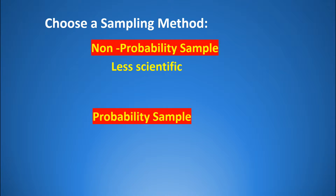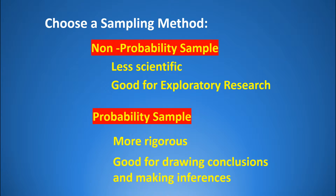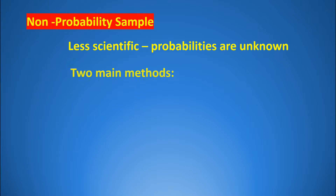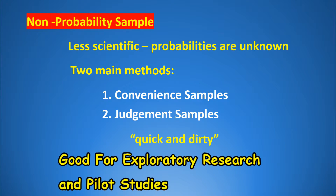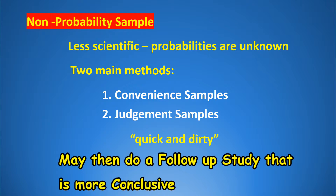A non-probability method is less scientific but usually more convenient, cheaper, and quicker than a probability method. We use non-probability methods when conducting exploratory research. Probability sampling methods are more rigorous and good for drawing conclusions or making inferences about the population. With non-probability methods, we don't know the probabilities attached to selecting items — we just select them. There are two main non-probability methods: convenience samples and judgment samples, used for exploratory research, pilot studies, or quick directional readings, typically followed up with conclusive research using probability methods.